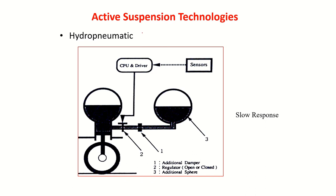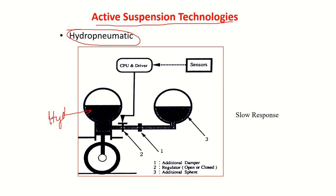Instead of only varying damping, can we vary the complete suspension force — both stiffness force and damping force together? That is what active suspension technologies do. One such technology is hydro-pneumatic suspension, which uses a hydraulic fluid and compressed air together. By varying both the air pressure and oil pressure, the force imparted by the suspension can always be varied.